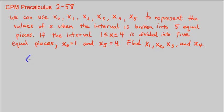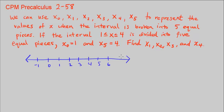Alright, so let's go ahead and look at this interval. So here along our number line we have negative 1, 0, 1, 2, 3, 4, 5, 6, 7... We're going to call this an x-axis because we're looking at x between 1 and 4. So we're going to look between here and here. We know we have 1, 2, 3 units — there are 3 units between 1 and 4. We're going to call the first point x sub 0 equal to 1, and x sub 5 is 4.